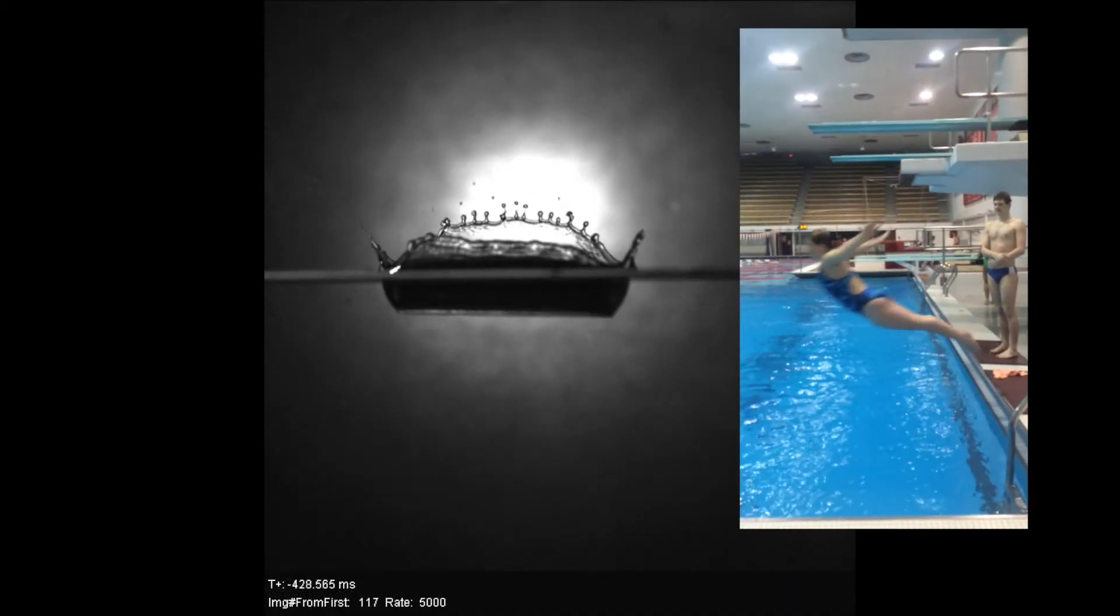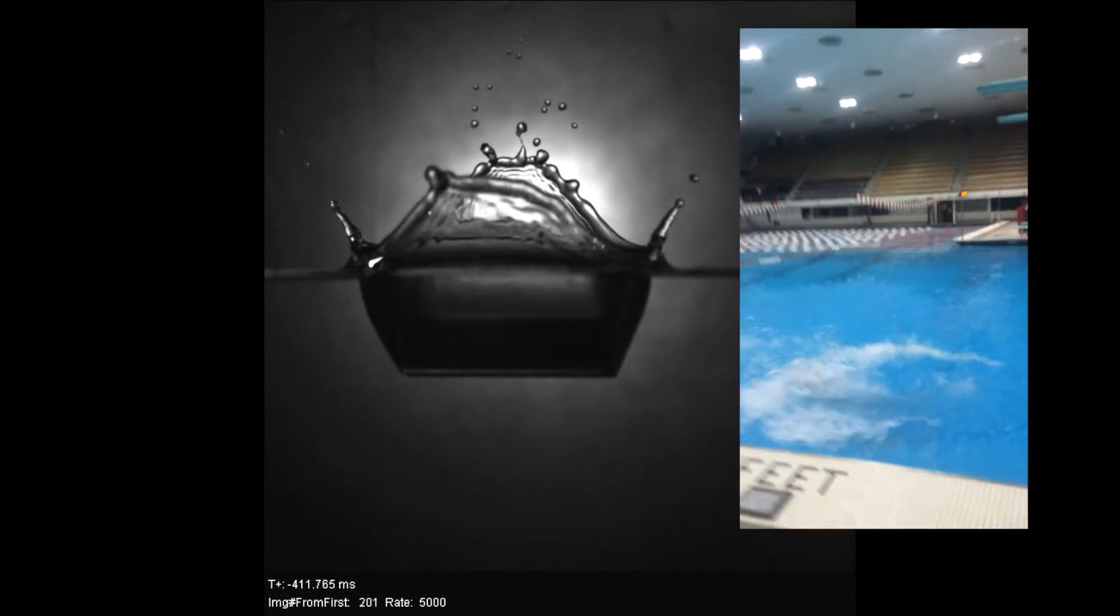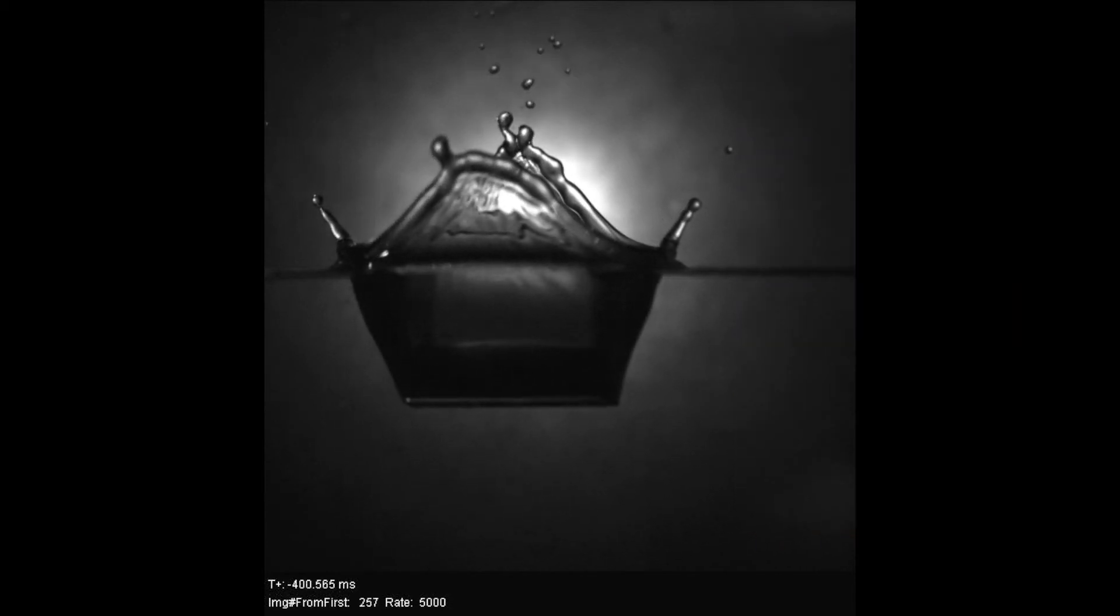A belly flop, represented by the box, breaks the surface of the water sharply, resulting in a splash that is four-sided, following the contour of the shape.